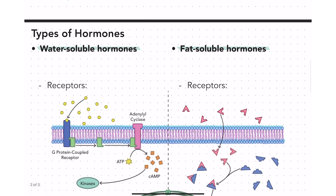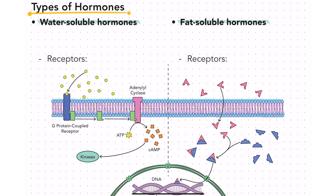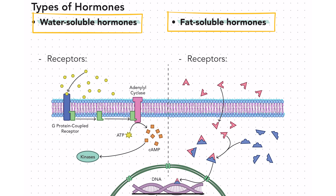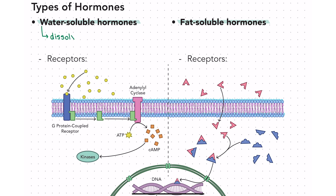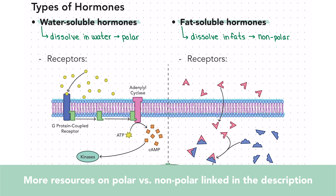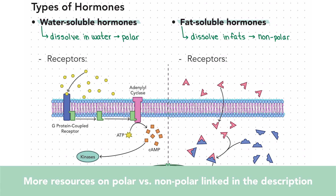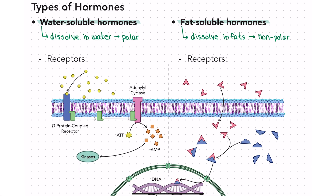Let's talk about some categories of hormones and where their receptors are located. We can categorize hormones into two different groups: they are either water-soluble or fat-soluble. Water-soluble means they can dissolve in water, so these are typically polar molecules. Fat-soluble means they can dissolve in fats, meaning they are typically non-polar. It's important to understand this distinction because it has a very large impact on where the receptor for that hormone is located.